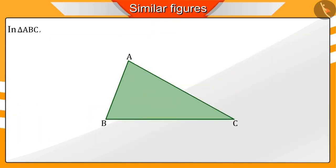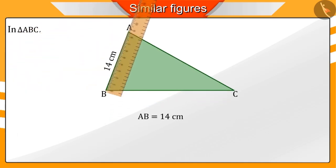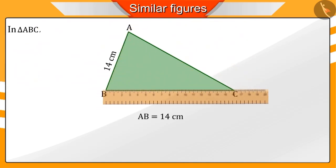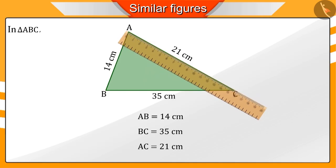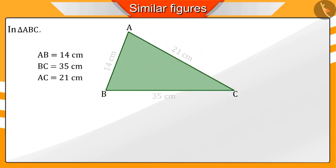When we measure the sides of this triangle, we find that AB is equal to 14 cm, BC is equal to 35 cm, and AC is equal to 21 cm.